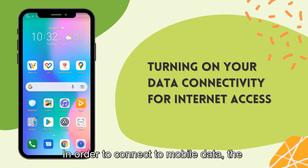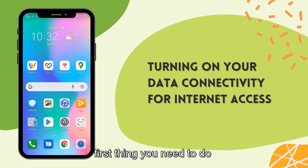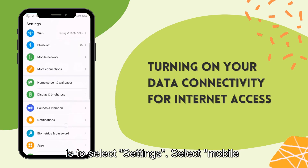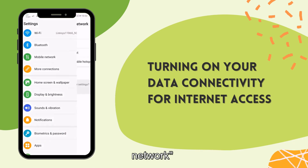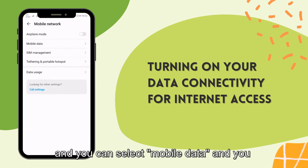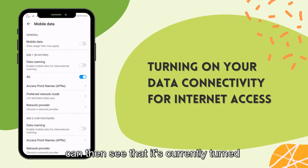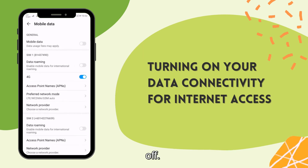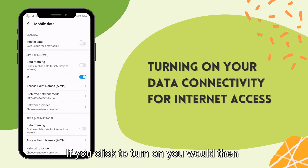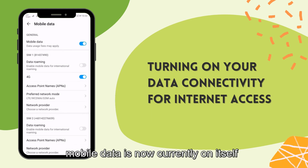In order to connect to mobile data, the first thing you need to do is to select Settings. Select Mobile Network, and you can select Mobile Data. You can then see that it is currently turned off. If you click to turn on, you would then see that your mobile data is now currently on.